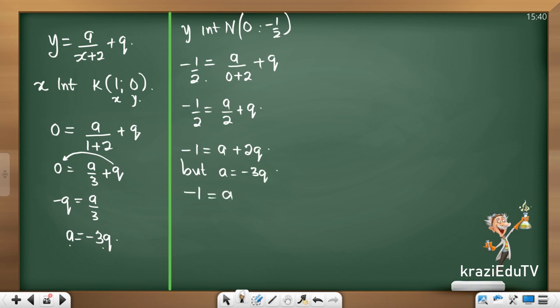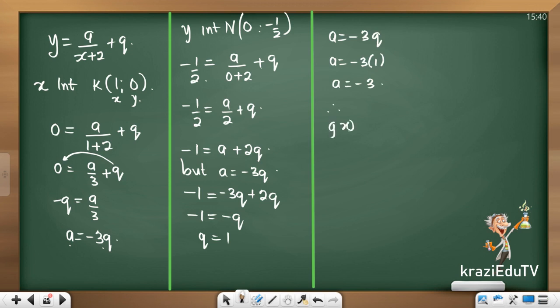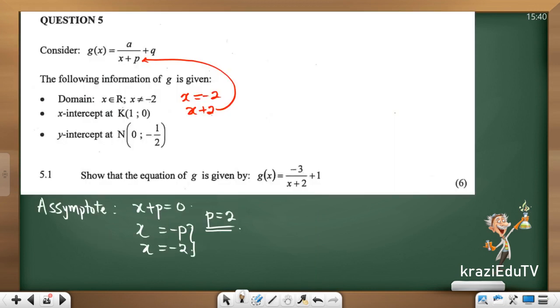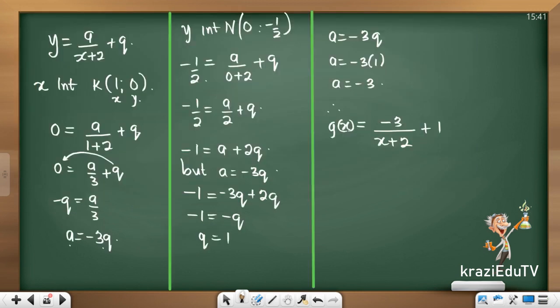But a equals to negative 3q. So instead of writing a, negative 3q plus 2q. What is 2 minus 3? Negative 1 equals to negative q. So q equals to 1. Awesome. If my q equals to 1 and I know that my a is negative 3q, therefore a is negative 3 multiplied by 1 and a is negative 3. Therefore, my g of x can be written as negative 3 over x plus 2 plus 1. Let's check. Is that the equation we have? Negative 3 over x plus 2 plus 1. Beautiful.